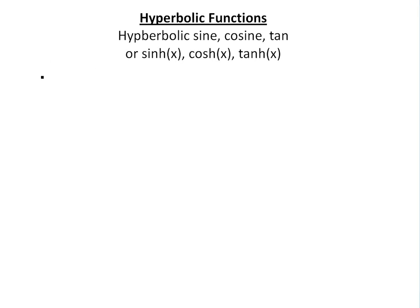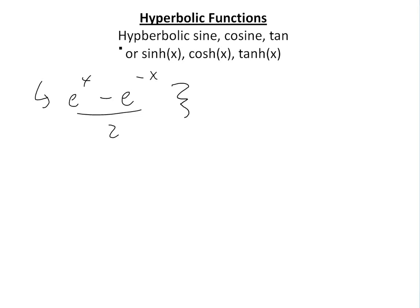Basically what this is: in certain applications in engineering, math, and physics, you get a lot of combinations like e to the x minus e to the negative x divided by 2. You get these certain combinations a lot, so mathematicians basically just defined them and gave them these names. This one is actually sinh.